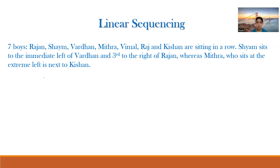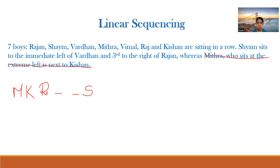We start with Mitra since it is mentioned he sits at the extreme left. So position 1 is Mitra, and since he is next to Kishan, position 2 is Kishan. Now, Sham is third to the right of Rajan — meaning after Rajan, count first, second, third — the third position is Sham. So Rajan is to the left of Sham with two people in between.